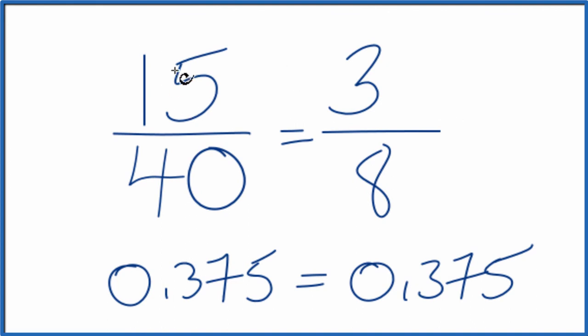They're equivalent fractions. They're equal, just that we've written them in different terms. 15 fortieths can be simplified down to 3 eighths, and we can't simplify this any further.